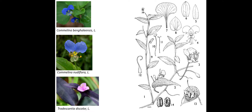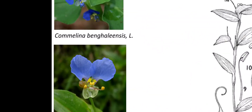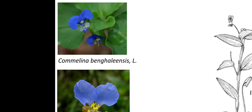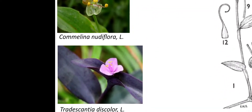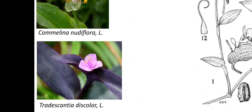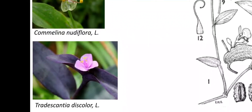Here we can see pictures of flowers and diagrammatic presentations of the family members. Here is the flower of Commelina benghalensis — a brightly blue colored flower common in India, growing in the rainy season throughout the country. Then we can see the flower of Commelina nudiflora, a common weed found growing along roadsides. This is the beautiful pink colored flower of Tradescantia, grown in gardens as an ornamental plant.